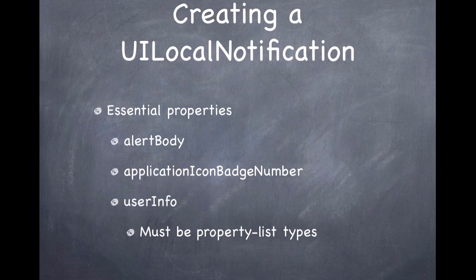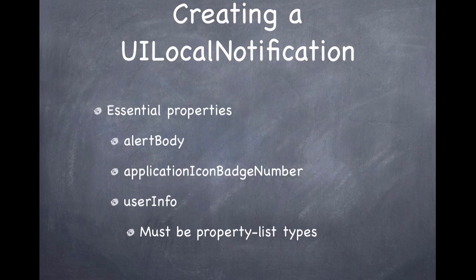The third essential property is userInfo, which is an NSDictionary — objects stored in it must be property list types like NSNumber or NSString. This becomes very valuable because you can store information about the particular notification. For example, in my app I store the object ID of the message tied to a notification, so when the user swipes on it, I can pull up that message and the user only has to hit one button to send it.